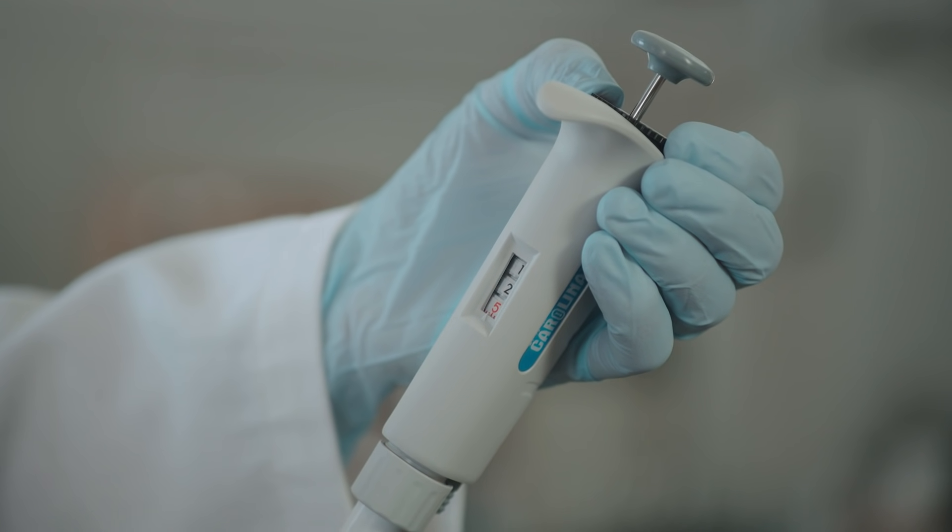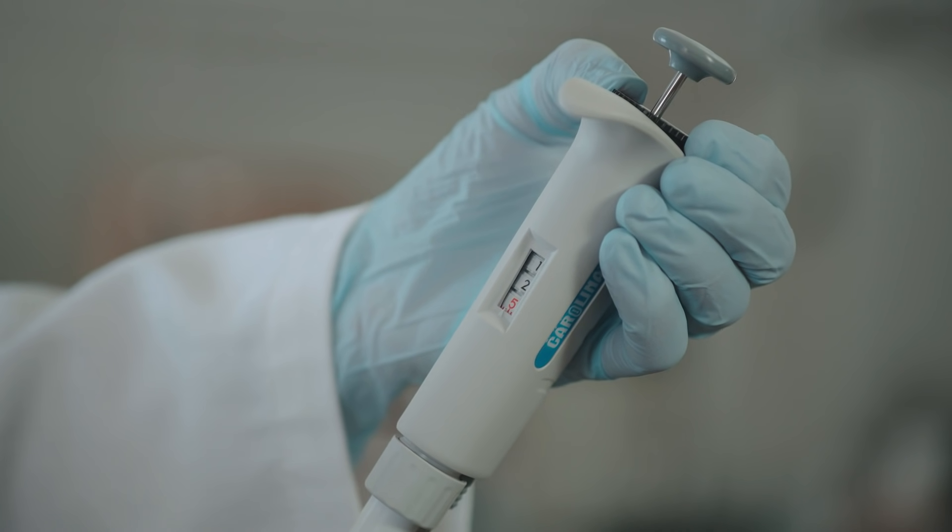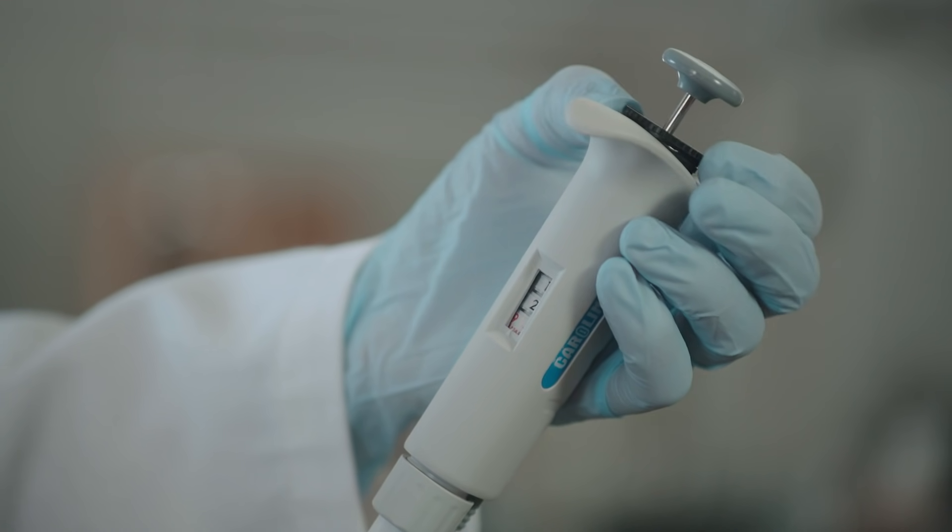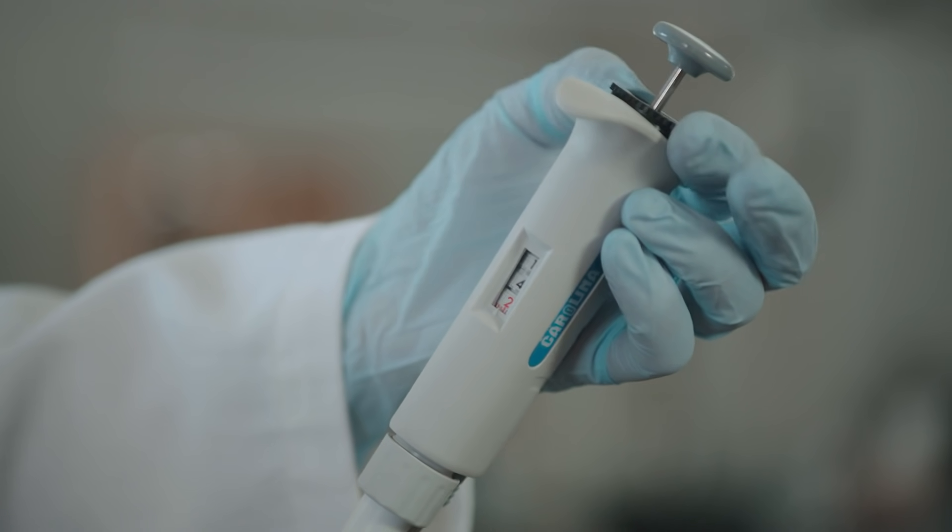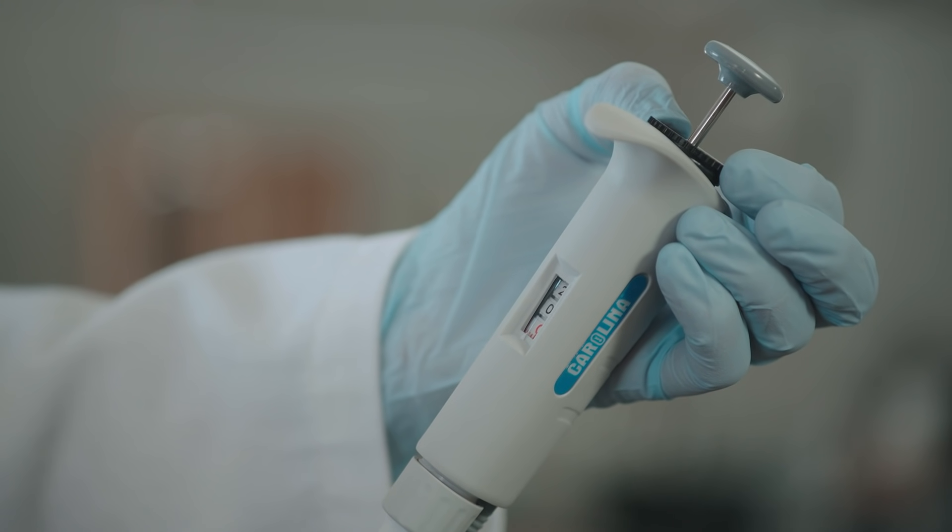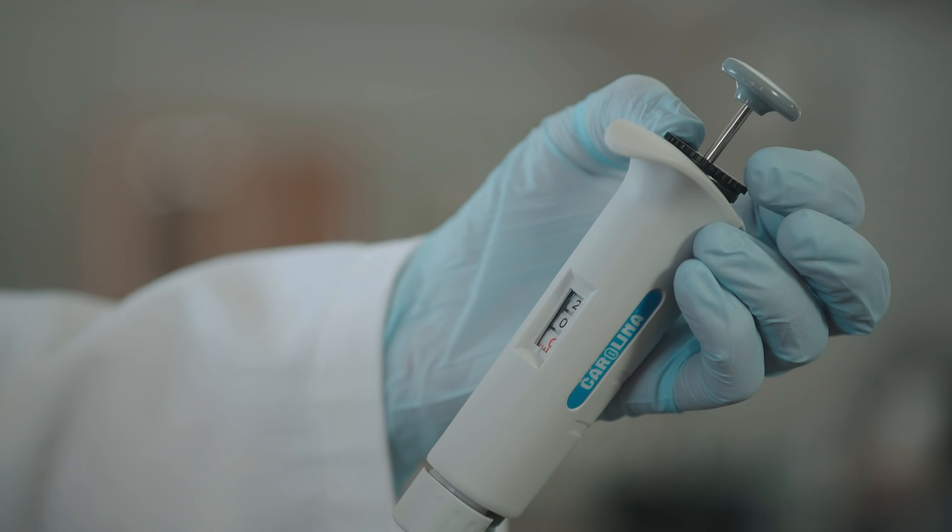Different micro pipettes have different but similar mechanisms for setting the volume they will take up. To set the volume on this P20, gently pull up and turn the black wheel as shown here. This pipette has now been set to 20 microliters.